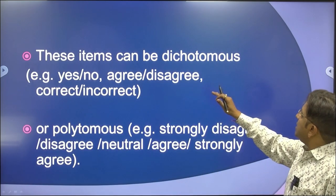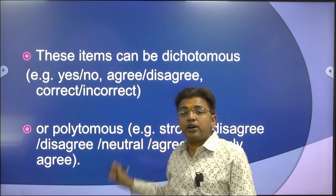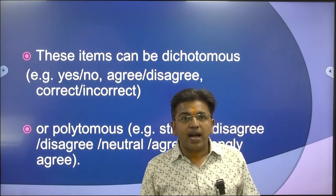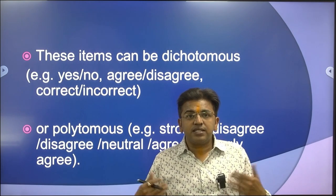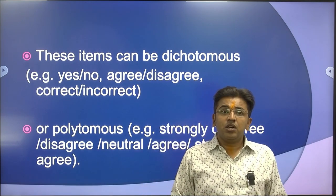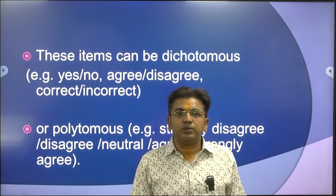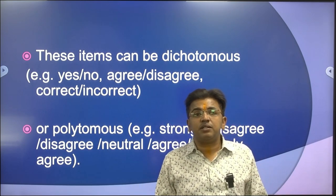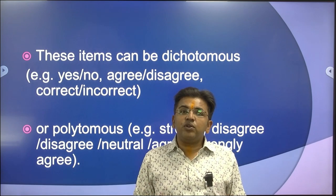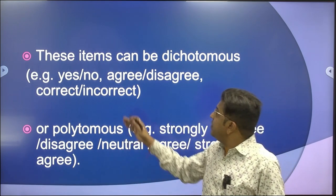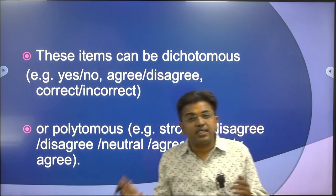These items can be dichotomous — that is, you can take them as yes or no, agree or disagree, or correct or incorrect. For example, you ask a respondent whether they have a very good music system — they say yes or no. Or whether all the people residing in Allahabad are graduates — yes or no. So whenever we ask a question with yes or no, agree or disagree, correct or incorrect, we say the items are dichotomous in nature.